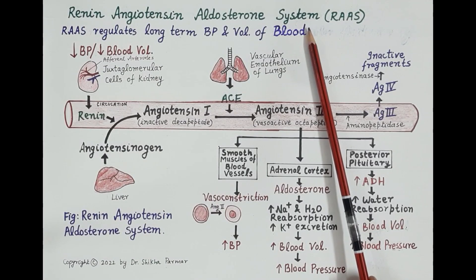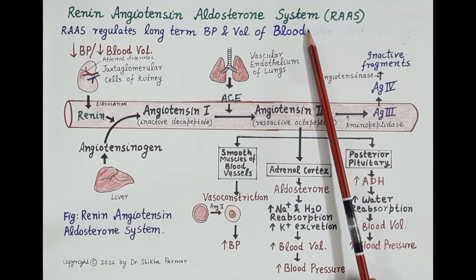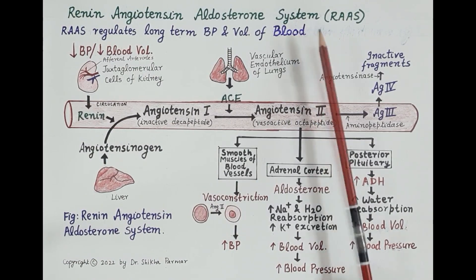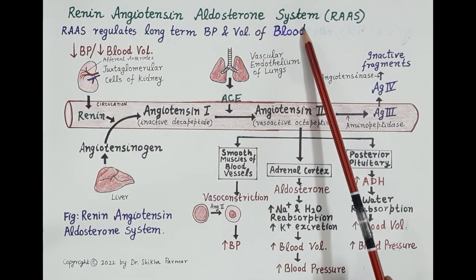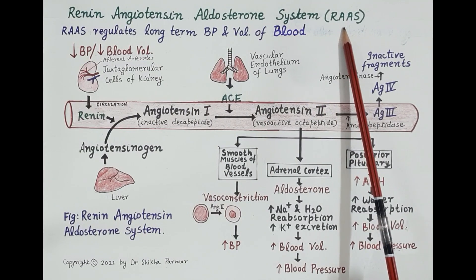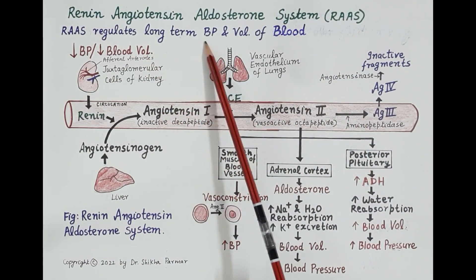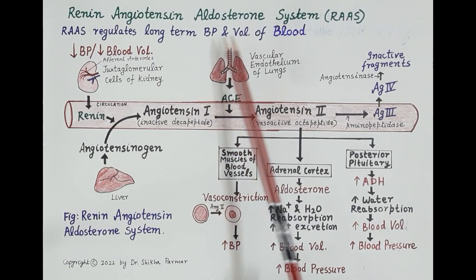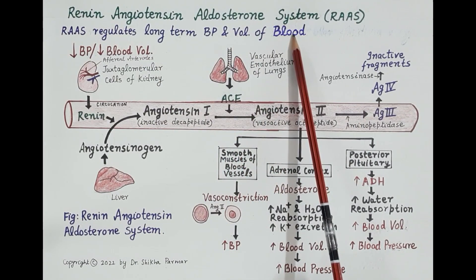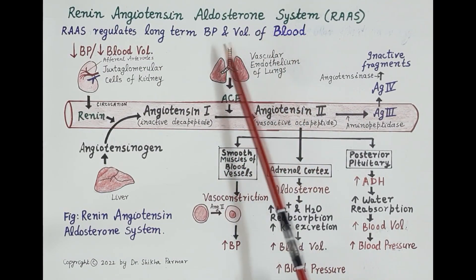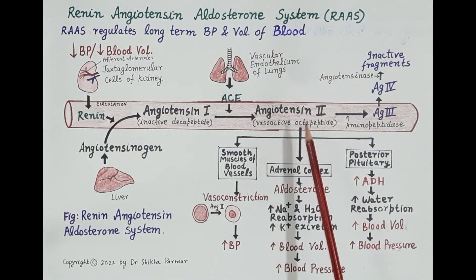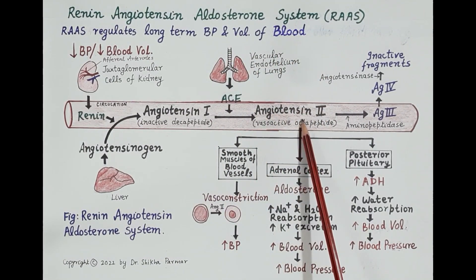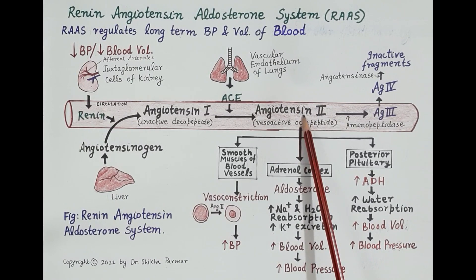Hello students, in today's video we are going to study the physiology of the Renin-Angiotensin-Aldosterone System, in short termed as RAS. RAS plays a very important role in regulating long-term blood pressure and the volume of blood. Angiotensin 2 is the key hormone of the Renin-Angiotensin-Aldosterone System.